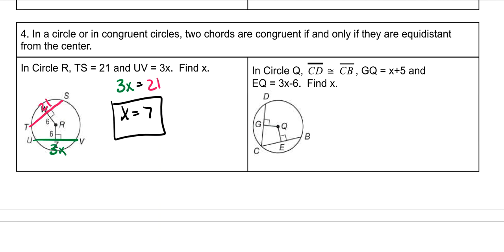All right, then it says that CD and CB are congruent. So these two are the same. We know that they are. And then it says that GQ is X plus 5, and EQ is 3X minus 6. So because we know those chords are congruent, we know their distance to the center is also the same. So we set these equal to each other and solve. Subtract X on both sides. Add 6 to both sides. Then divide by 2, and X is 5.5.